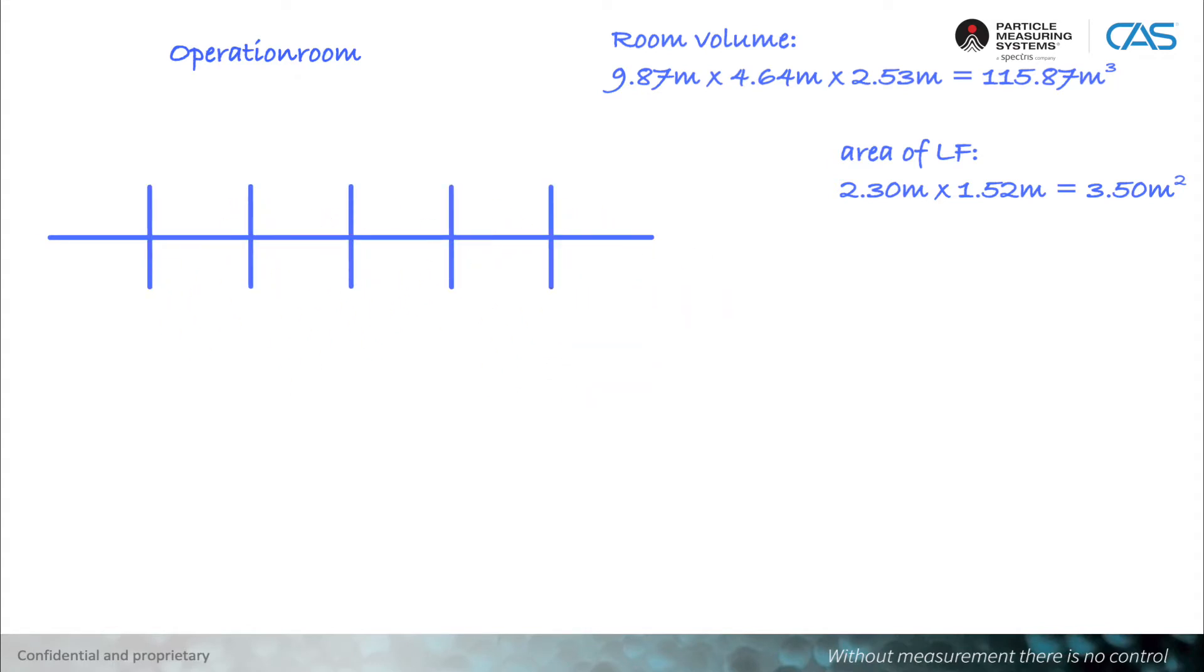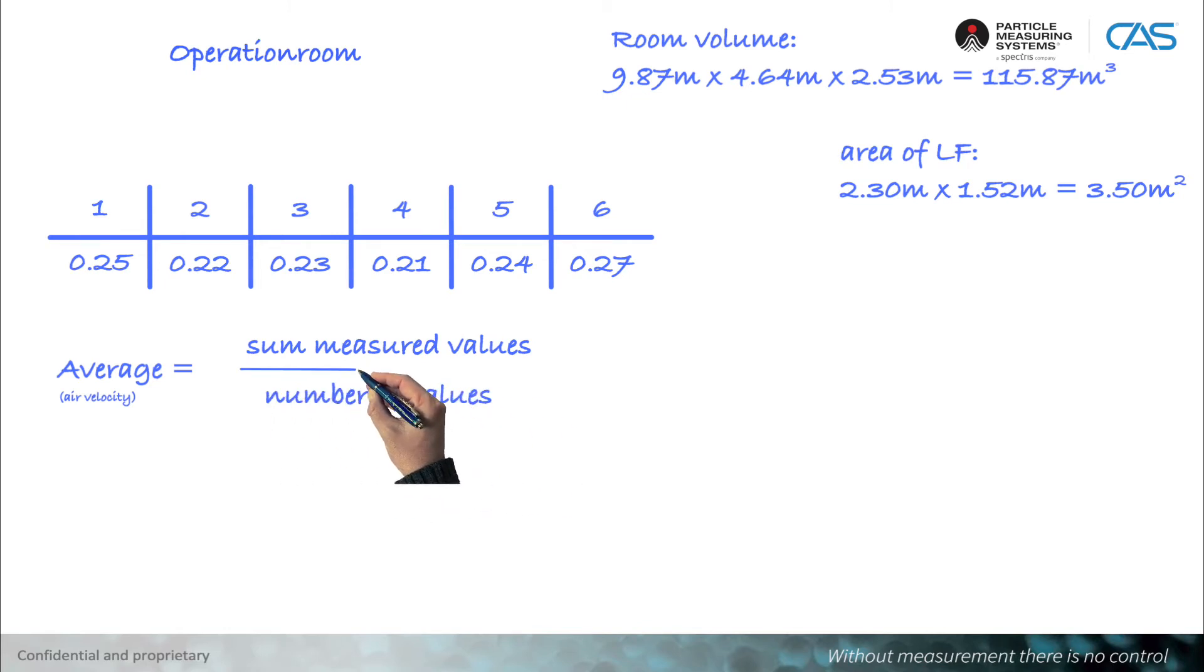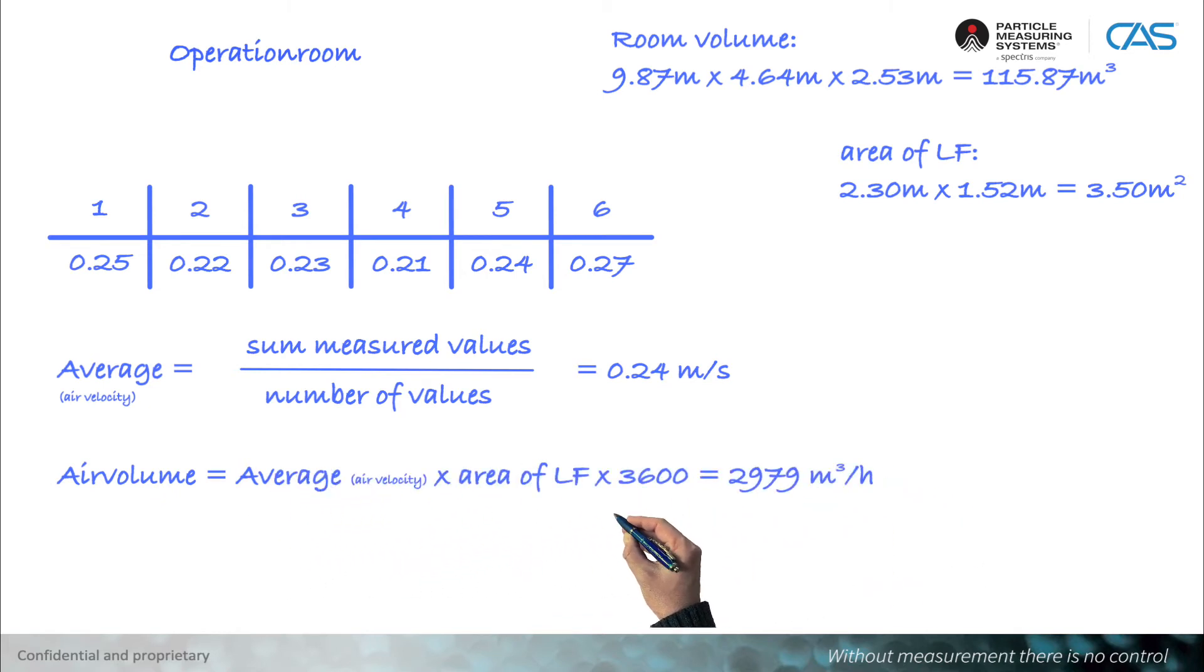Following the recording of the measured values, they are evaluated. The first step is to determine the mean value of the air velocity, which is calculated by dividing the sum of the individual measured values by the number of measured values. With the help of the mean value, the air volume can be calculated. For this purpose, the mean value, the area of the laminar flow, and 3600 are multiplied together.